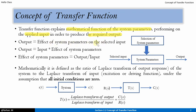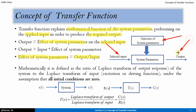We have two parts here. One is the effect of the system parameters and the second one is the selected input. This equals the output. So output is equal to input multiplied by the effect of the system parameters. The effect of the system parameters is equal to output upon input. If system parameters are applied through a selected input and we get a desired output, then transfer function is equal to output upon input.